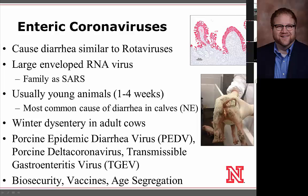Bovine enteric coronavirus is also different in that it can affect adult animals, causing a disease called winter dysentery. In swine, several coronaviruses recently emerged in the U.S., thought to have come from China, including porcine epidemic diarrhea virus and porcine delta coronavirus. We have active research projects on these at UNL. Biosecurity — preventing these viruses from getting onto your farm — is probably the best strategy. Vaccines are available, and for cattle, age segregation can be important in breaking the disease cycle.